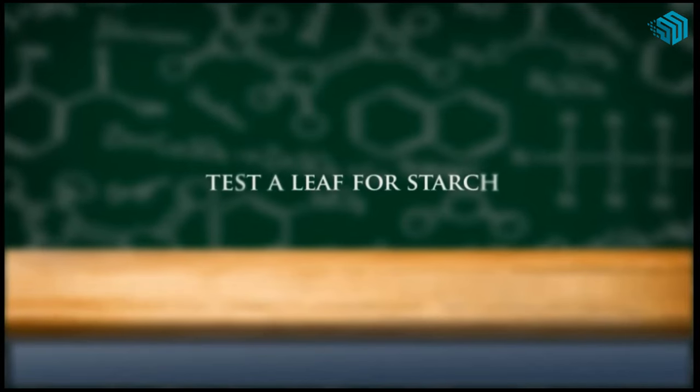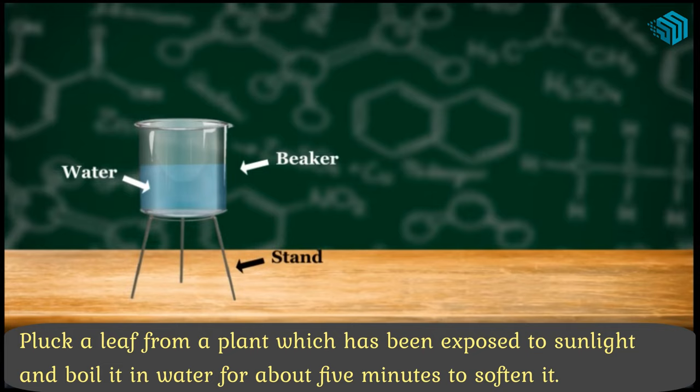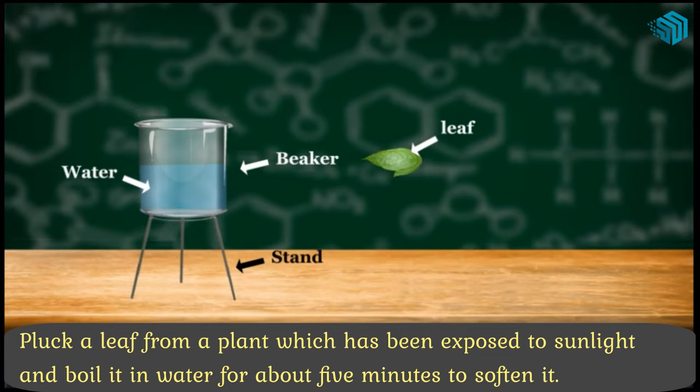To test the leaf for starch, take a beaker and half fill it with water. Pluck a leaf from a plant which has been exposed to sunlight and boil it in water for about five minutes to soften it.